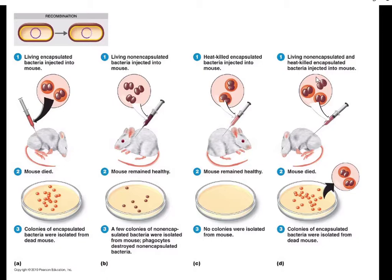We now know that the difference between rough and smooth is the presence or absence of a capsule. Capsules have a major advantage in evading a mammal's immune system. The rough form did not make capsules; the smooth form did. By having a capsule, smooth cells could evade the immune system, continue to replicate, and cause fatal disease. What must have happened is the rough cells got the DNA to make capsules from the degraded smooth cells floating around in the broth, brought it in, and became recombinants.